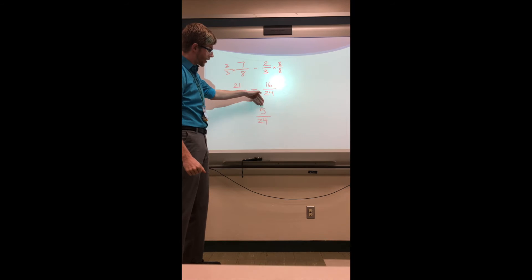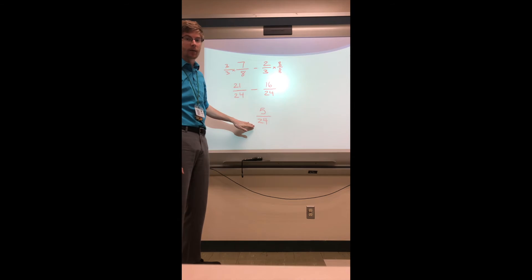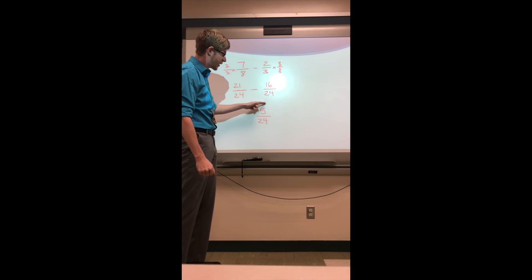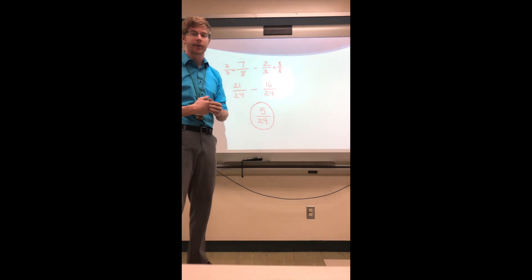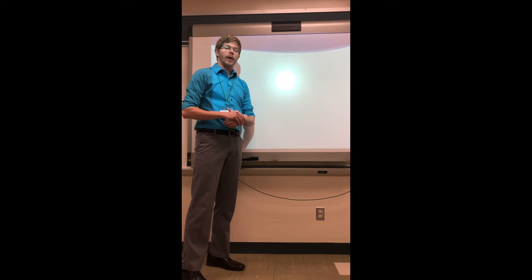Because again, if I try step three, five over 24 cannot be reduced, and my numerator is smaller than my denominator, so again it's not an improper fraction which means I don't have to convert it to a mixed number. This is my final answer.